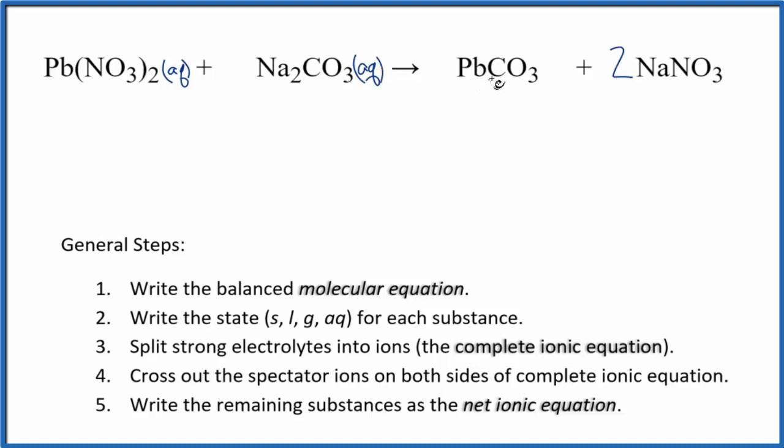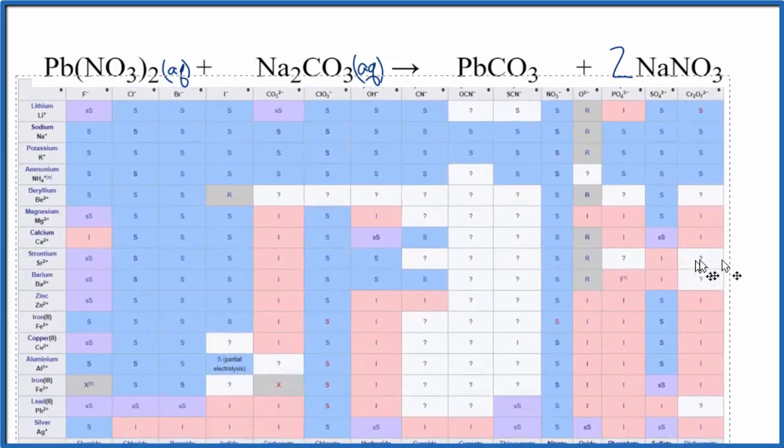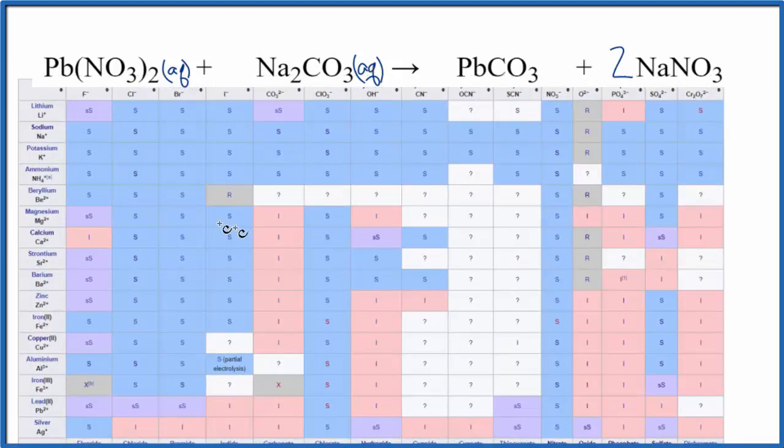Carbonates, they in general aren't soluble except for group 1. We could check on a solubility table, though, just to make sure. And when we look at our table here, we have lead down here and then carbonates up here.